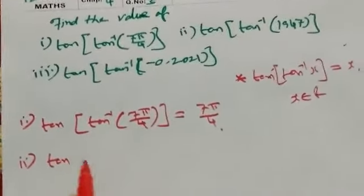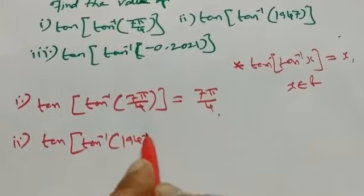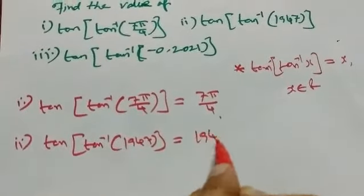Second one: tan inverse of tan inverse of 1947 equals 1947.